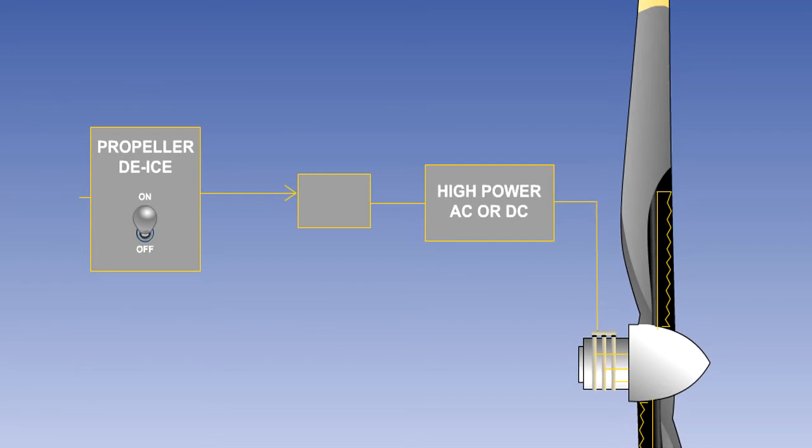Depending on the type of aircraft, the electrical power for heating the elements is either direct or alternating current.